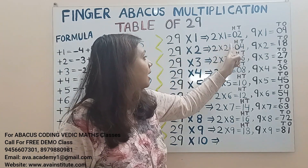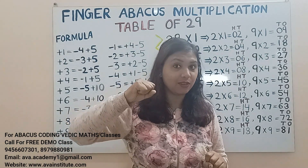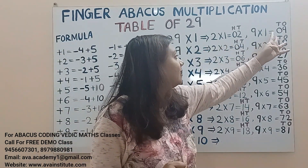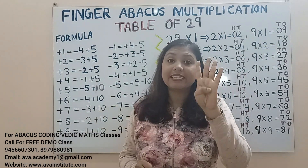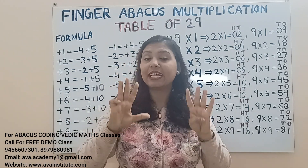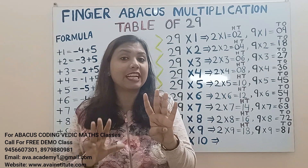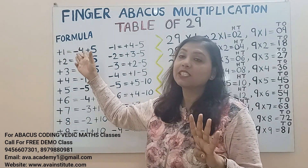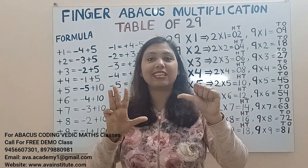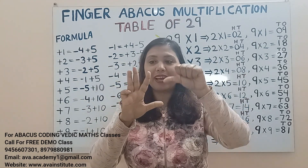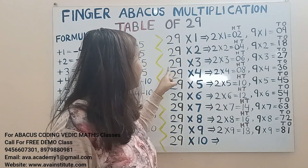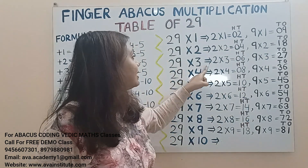Next, 29 twos. 2 twos are 4 — represent 0 in tens and 4 in hundreds. 9 twos are 18 — represent 1 in tens and 8 in ones. To add 1 in tens, the plus 10 formula is minus 40 plus 50. So the answer is 50... 5, 6, 7, 8 — 58 is the answer.